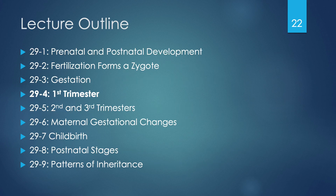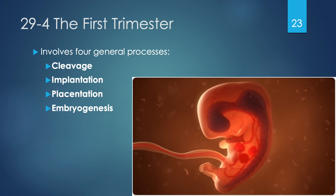The first trimester extends from day zero through to the ninth week of pregnancy. During that time, four things must occur: cleavage (cells fusing and propagating), implantation (the conceptus implants in the uterine endometrial tissue), placentation (the placenta begins to form once implantation occurs), and embryogenesis (the process of forming an embryo, now that nutrient support from the endometrium is available).